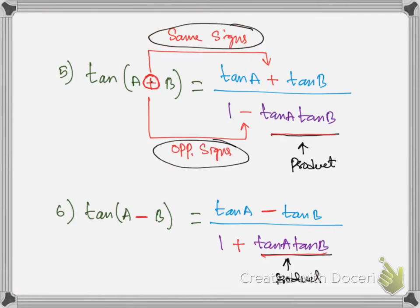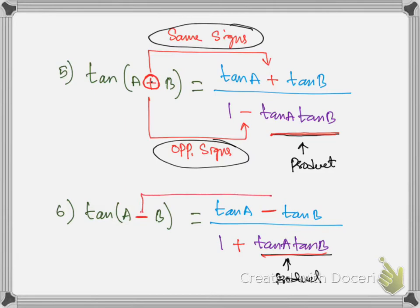For the tan(A+B) formula, the signs are the same in the numerator: if this is a plus sign, this will be plus. Signs in the numerator and denominator are opposite, so if this is plus, this must be negative. We have the product of tan here and sum of tan here. When we have a negative sign, these two signs in the numerator will be the same and these two signs will be opposite, giving the difference of tan in the numerator and product of tan in the denominator.